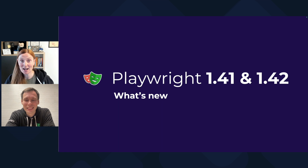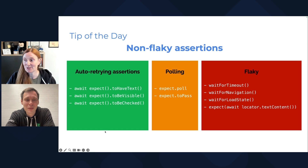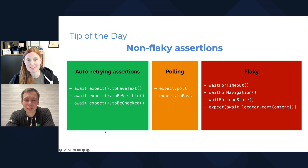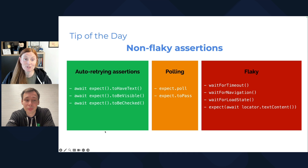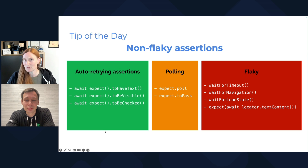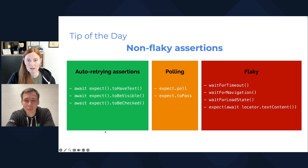So let's first of all dive into our very famous tip of the day. Today's tip of the day is about non-flaky assertions. Auto-retrying assertions is what you should be using — the ones with await and expect, things like to have text, to be visible, to be checked. Make sure there's an await before it.